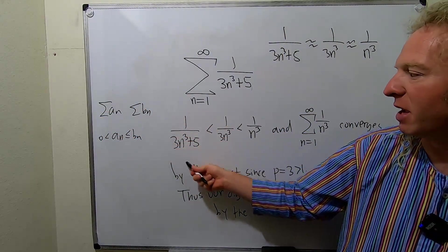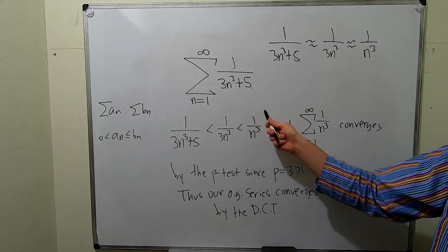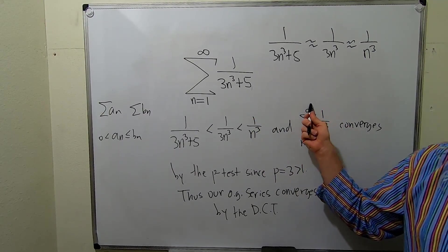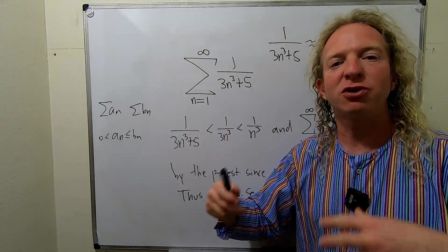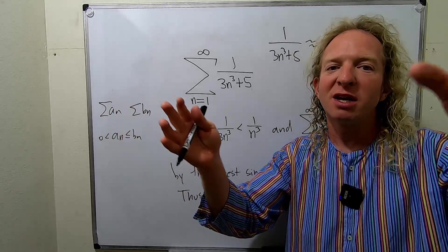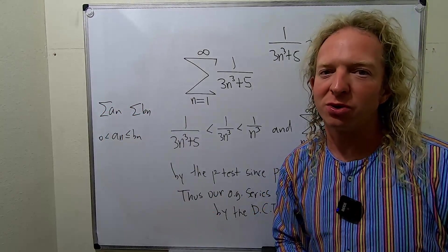Here this is our a sub n, this is our b sub n. The sum of the b's converges, therefore the sum of the a's converges as well. That should make sense: if something bigger converges, something smaller should also converge.